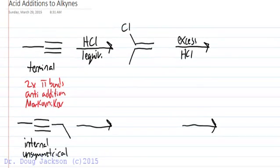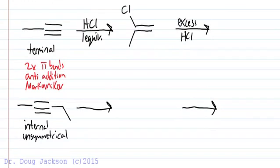However, if we have an internal alkyne, we're going to get anti-addition where the H and the Cl are on opposite sides.